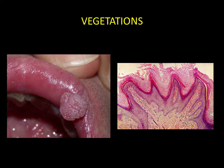Vegetations. These appear as exophytic growths on the mucosa. In most cases, these vegetations are keratinised.